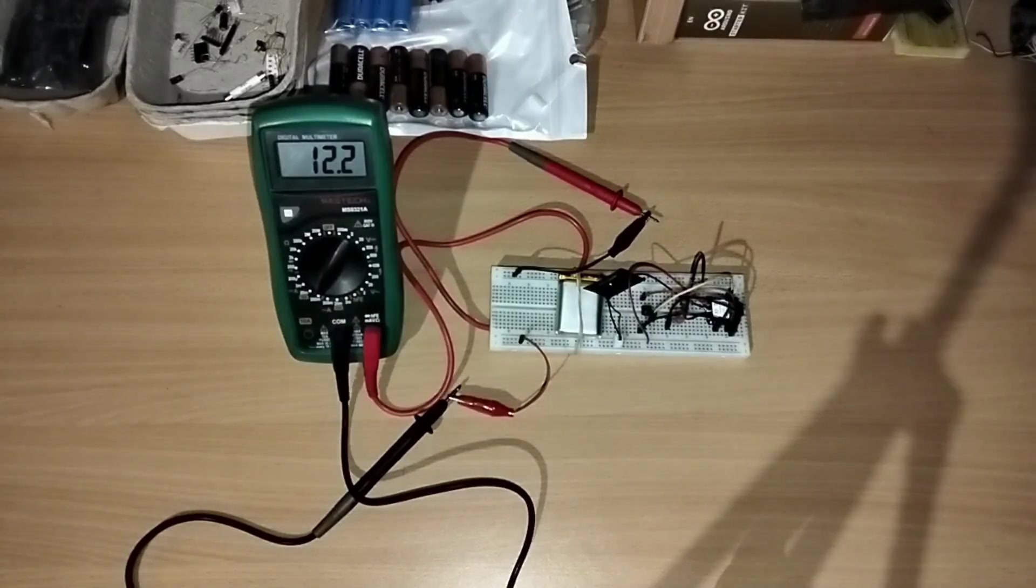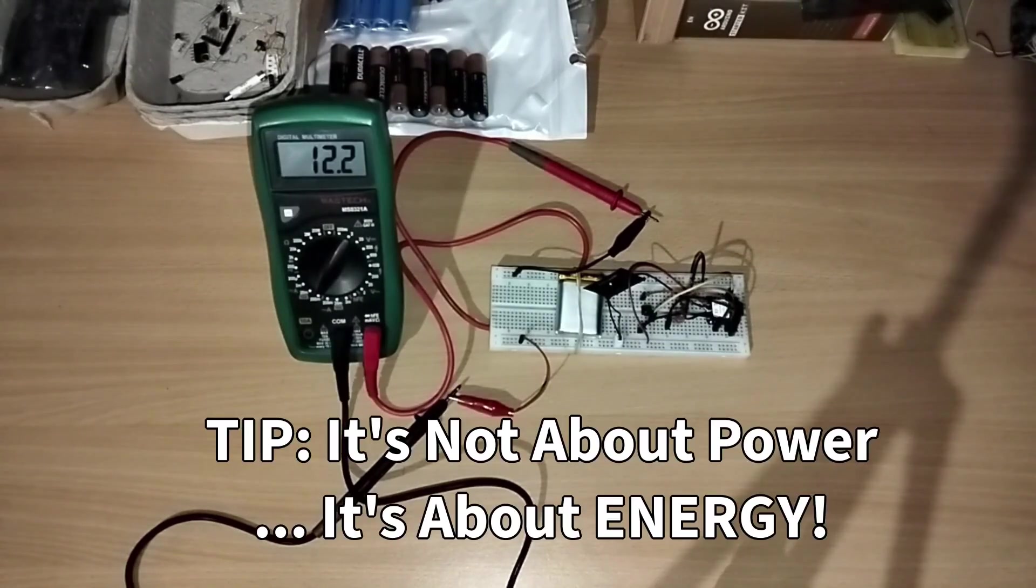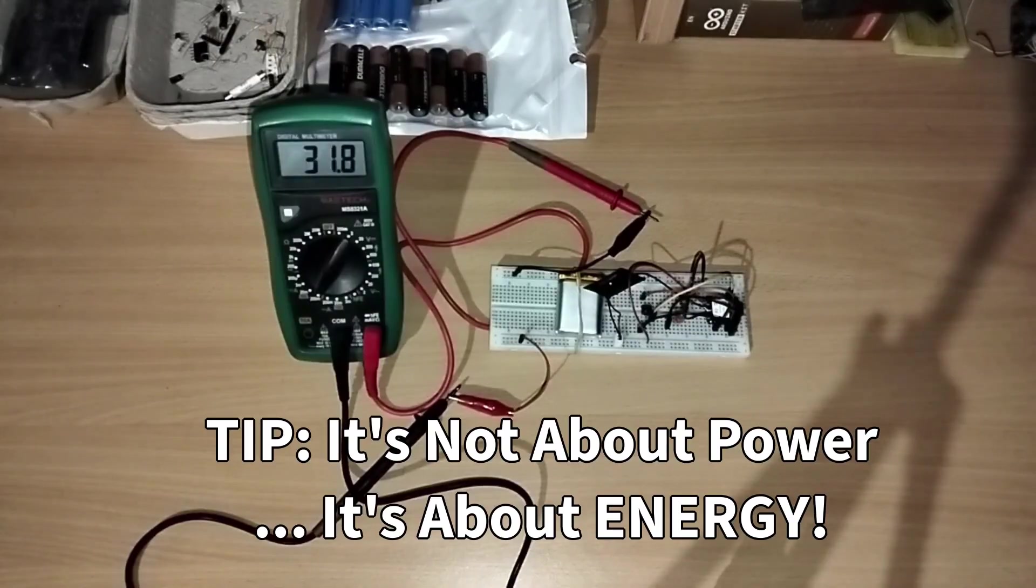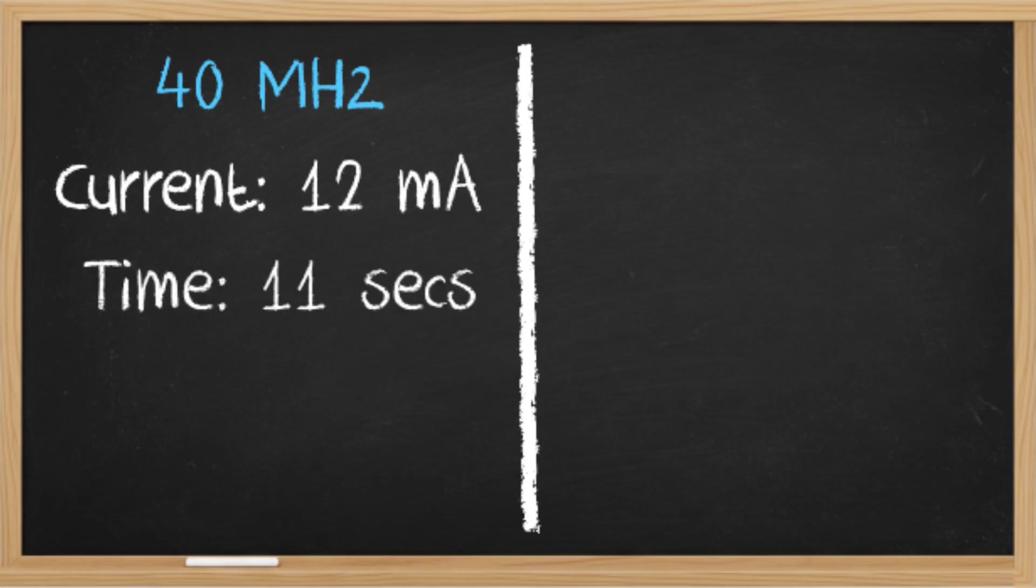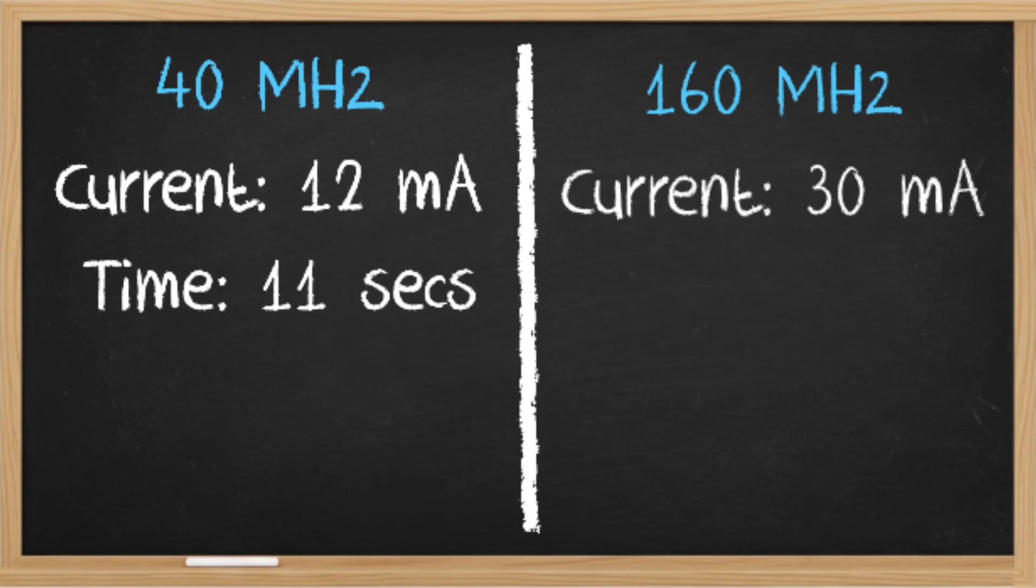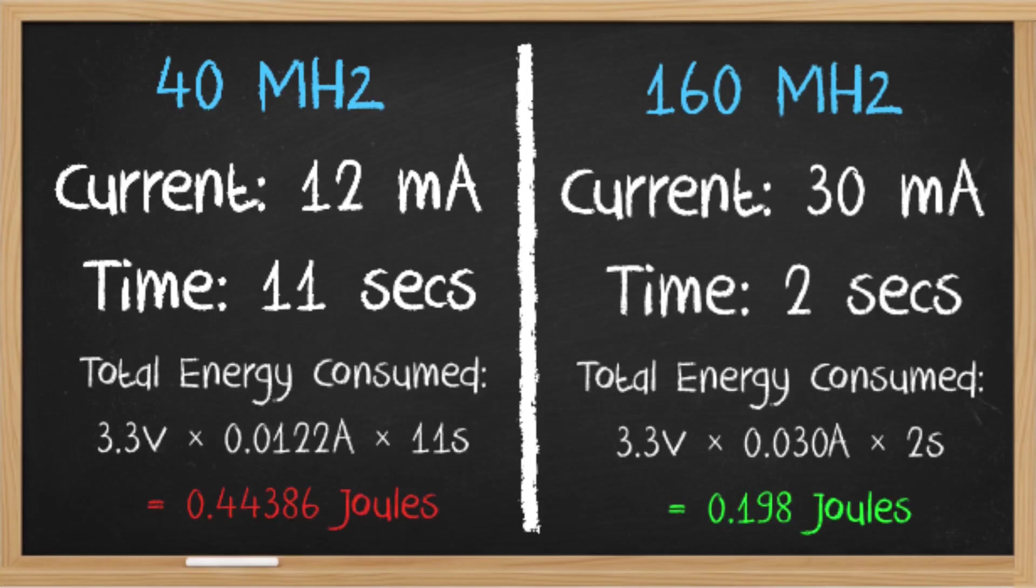But this leads to one of the most important lessons in battery life. It's a common trap to think that lower power draw always equals better battery life. But what really matters is the total energy used to complete a task. In our tests running a task at 40 megahertz drew only 12 milliamps but it took 11 seconds. Running at 160 megahertz drew a much higher 30 milliamps but it finished the job in just two seconds. When you crunch the numbers, running faster used less than half the total energy. The lesson is critical. Get the job done as fast as possible then get back to sleep. Sometimes sprinting is more efficient than jogging.